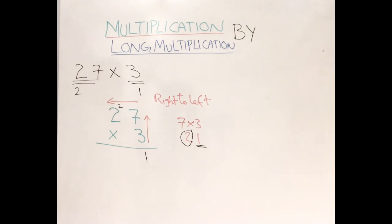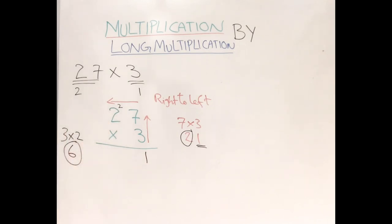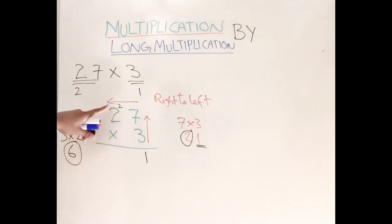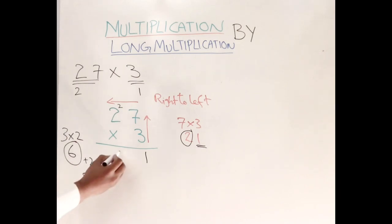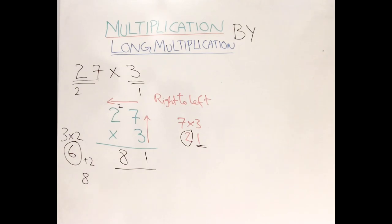The tens place carries to the next value. So three times two is six. But we need to check if we carried any number — six add two carried gives eight. Write down eight here. So the answer for 27 times 3 is 81.